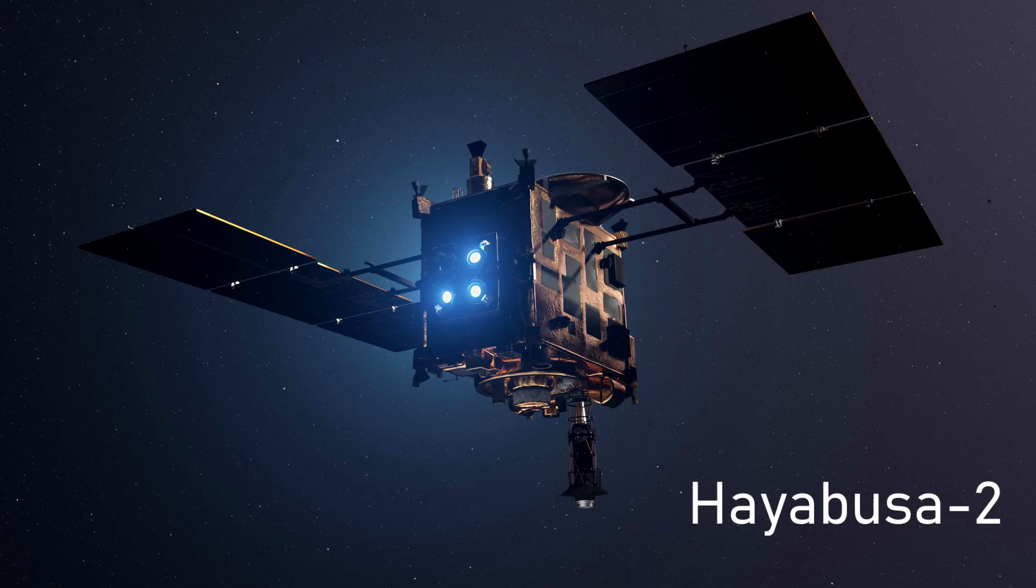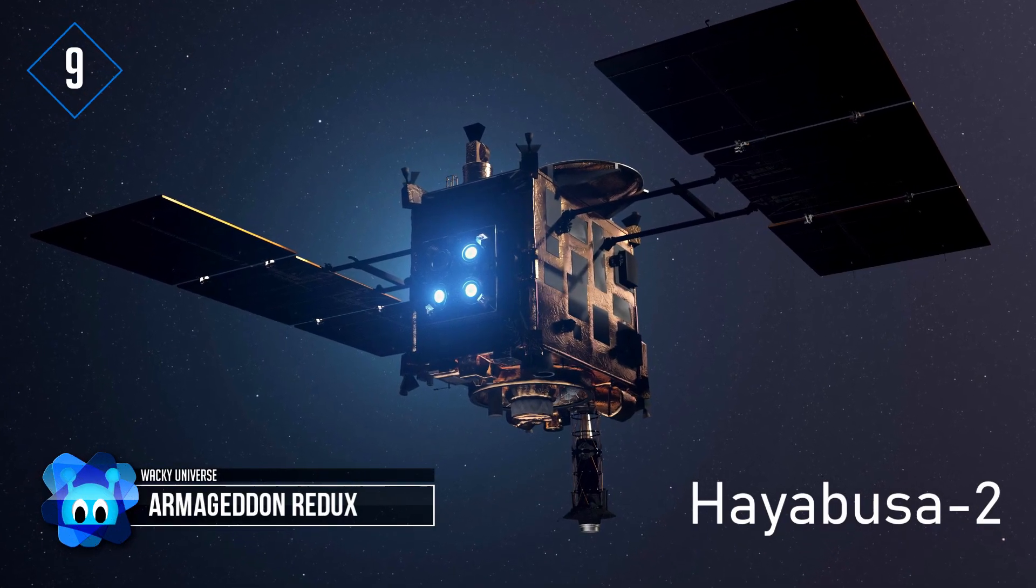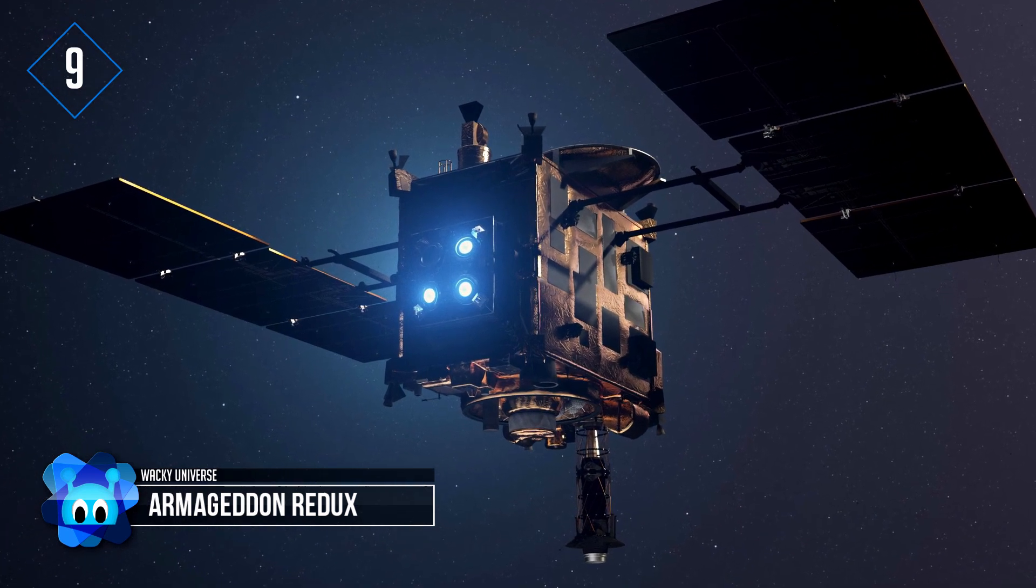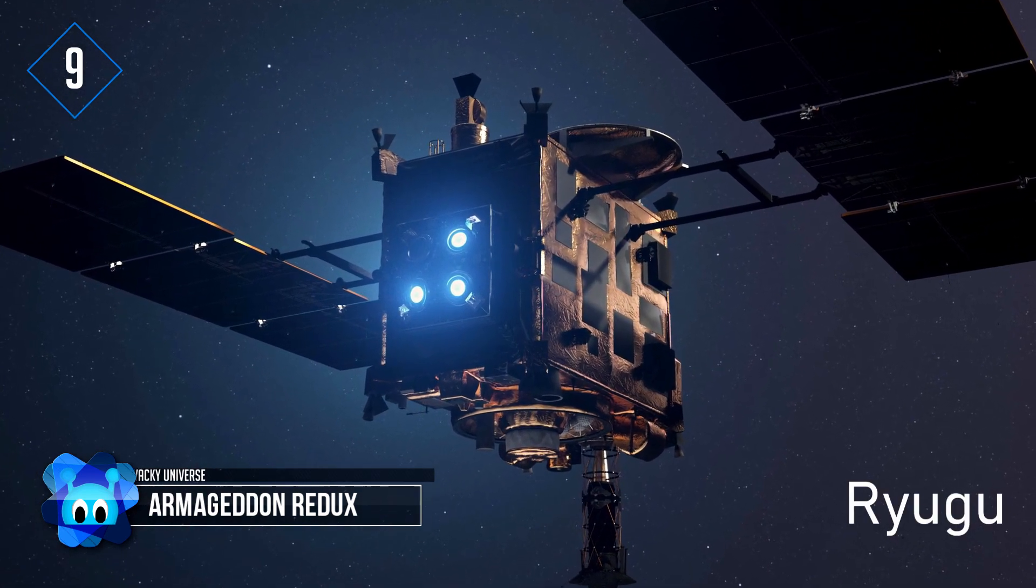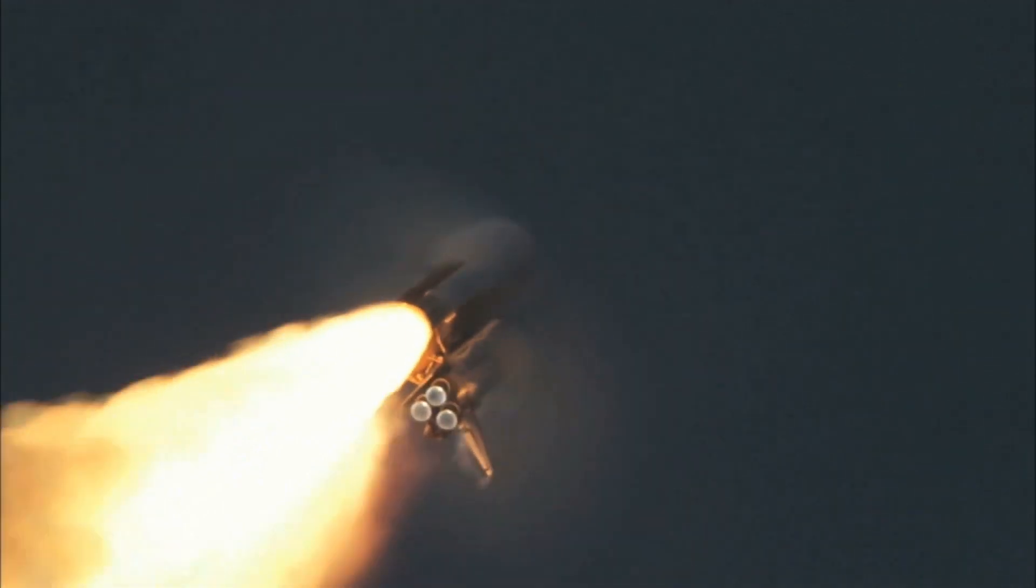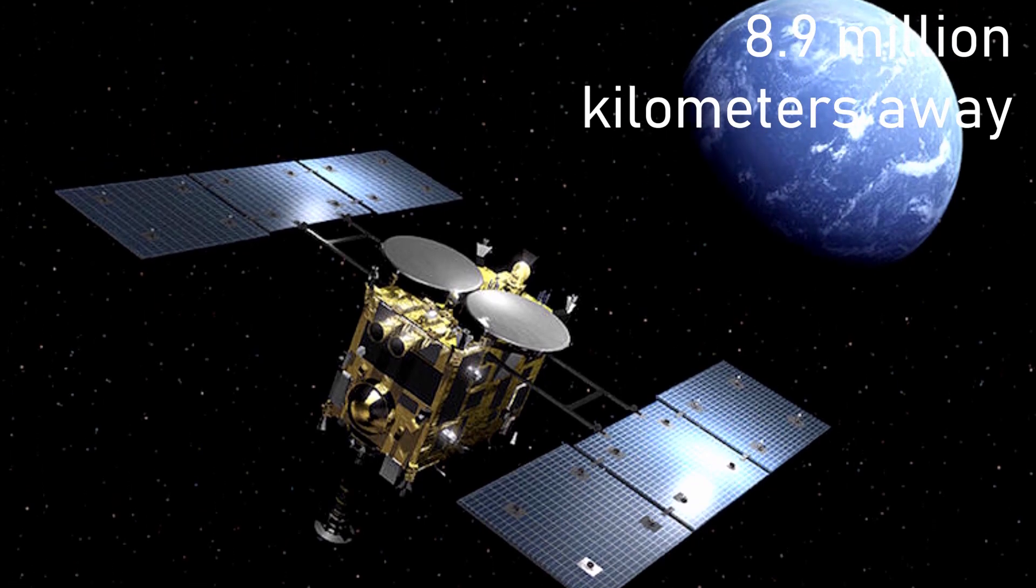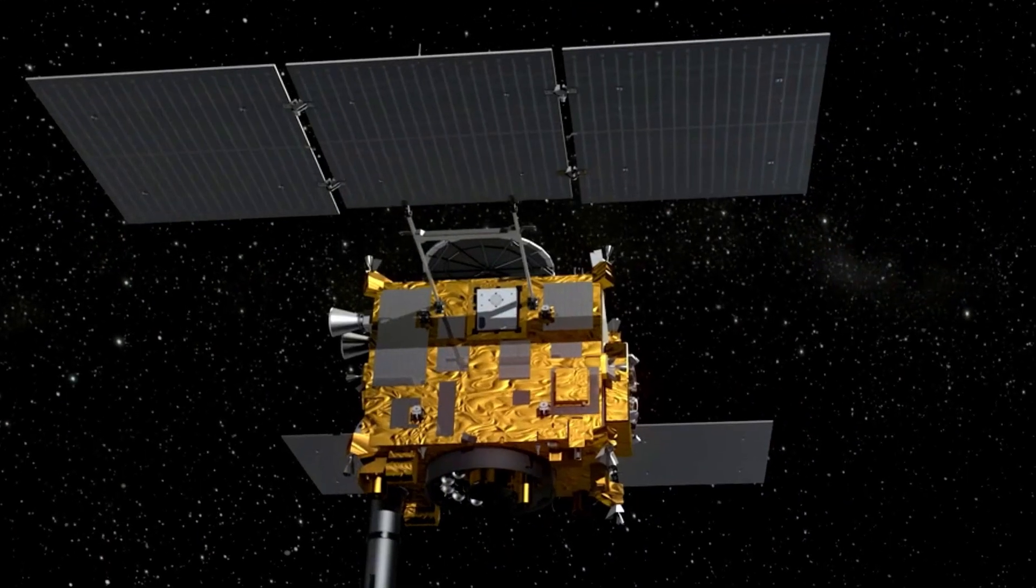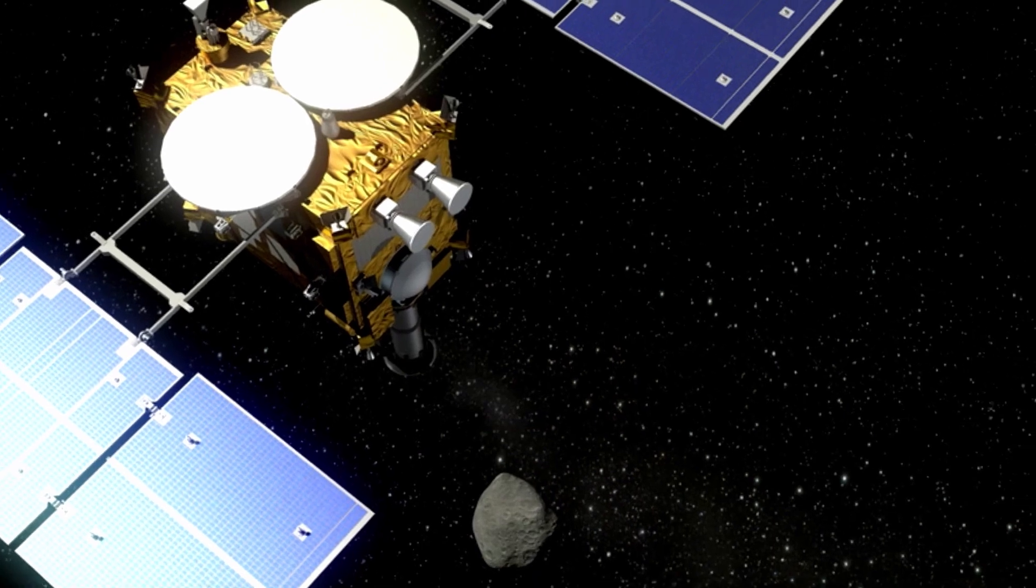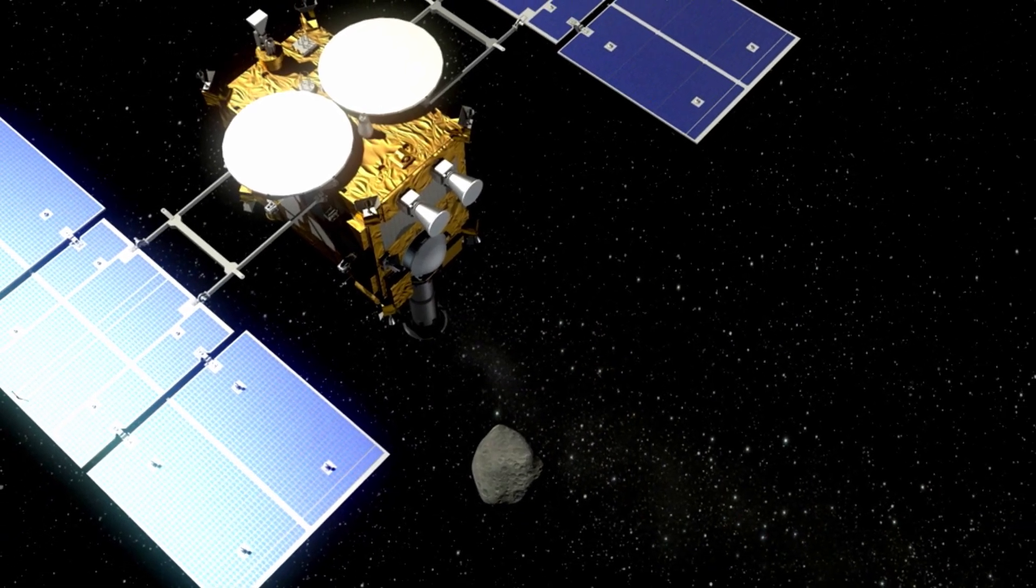Armageddon Redux. Hayabusa 2, the Japanese spacecraft, landed on an asteroid named Ryugu in July 2019 after leaving Earth in December 2014. At 8.9 million kilometers away, it took four and a half years to arrive. They gathered surface samples, but they wanted something from deeper down.